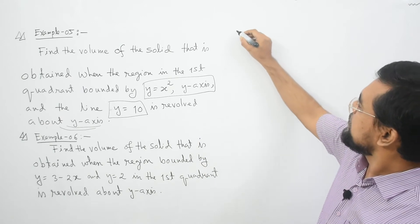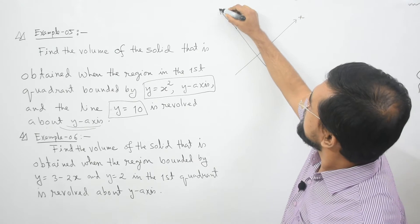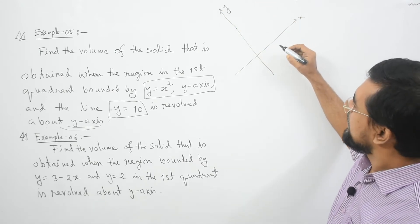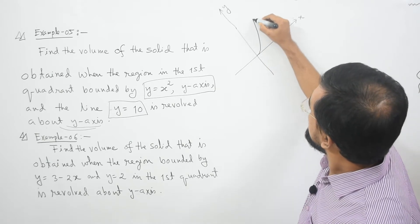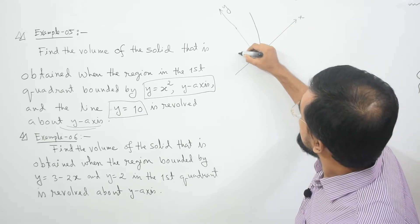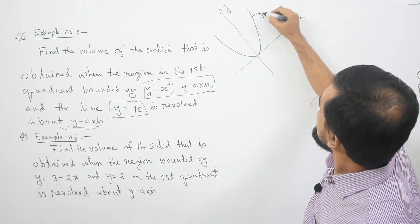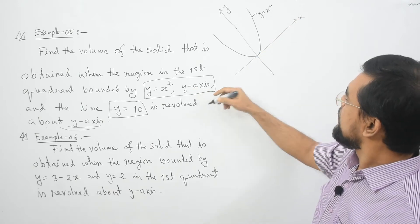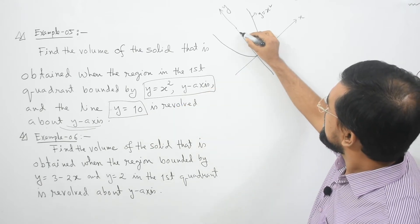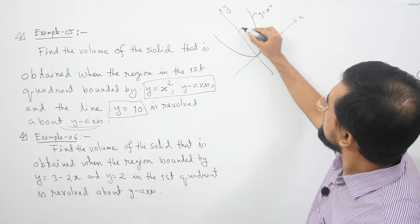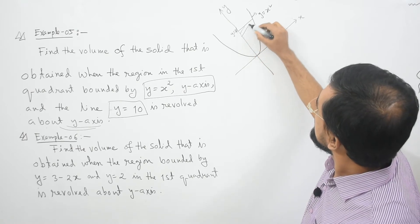So let me first draw the graph. This is our x-axis, this is the y-axis, and y equal to x square is this graph. The y-axis is this one, and the line y equal to 10 is here. So this is the region.